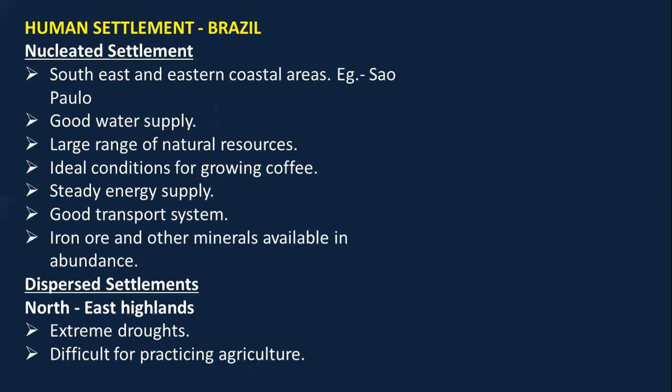Now for human settlement of Brazil. In Brazil we also study nucleated and dispersed settlements. The southeast and eastern coastal areas of Brazil are nucleated regions with high population. For example, in the state of São Paulo there is good water supply, ideal conditions for growing coffee, steady energy supply, good transport systems, and natural resources like iron ore are readily available in abundance.